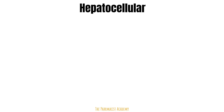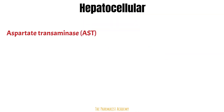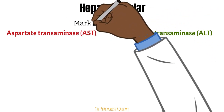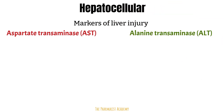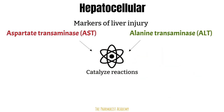First, hepatocellular. The two main enzymes of the liver that we focus on are aspartate transaminase, AST, and alanine transaminase, ALT. These are markers of liver injury. So if there is some injury in the liver, it will trigger the release of these enzymes into the bloodstream. Overall, these enzymes are needed to catalyze chemical reactions, which can lead to the production of bile, the production of clotting factors, and the breakdown of food and toxins.